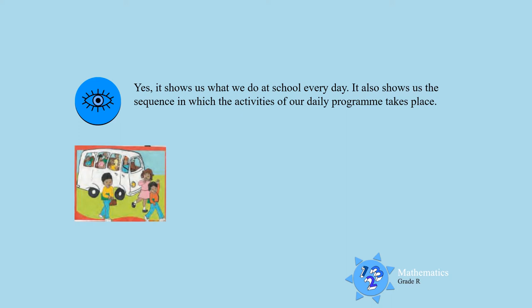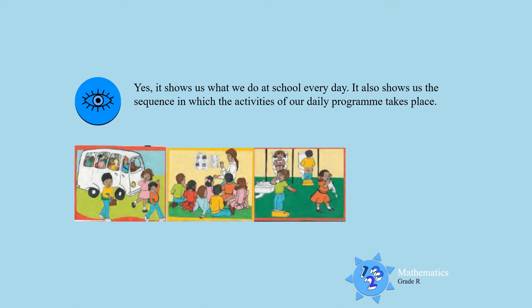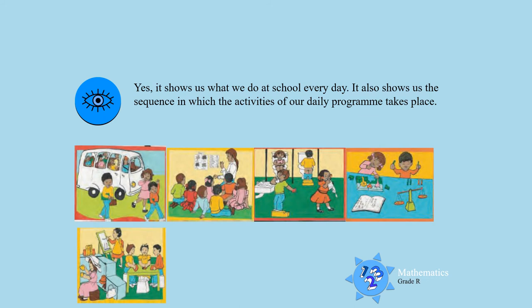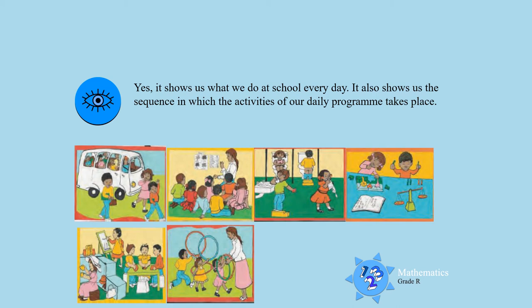You arrive at school — that's very good. Then we do the morning ring where teacher discusses different things with us. We go and have toilet routine because we need to use the toilet daily. And then we do some mathematics. After mathematics, we do some visual art and free play activities. And then we can also go and play outside with our hula hoops.